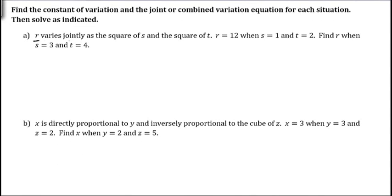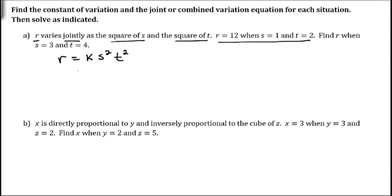R varies jointly as the square of S and the square of T. Jointly means it's going to be the product of the two variables S and T. So we're going to have R equals K times S squared, because it's the square of S, and then times T squared. Then they give us information to find K.